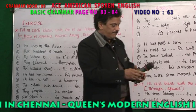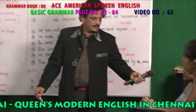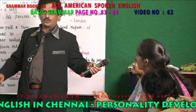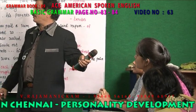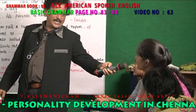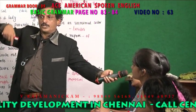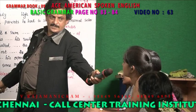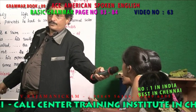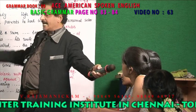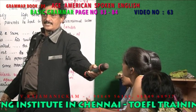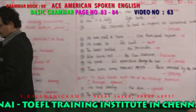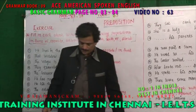Where is 'between' used? Between is used when there are two nouns — you are in the center of two nouns. 'Among' is used when there are more than two nouns and you are in the middle of many. 'Besides' means in addition to. These are the prepositions you must know, understand, and use in your day-to-day conversation.